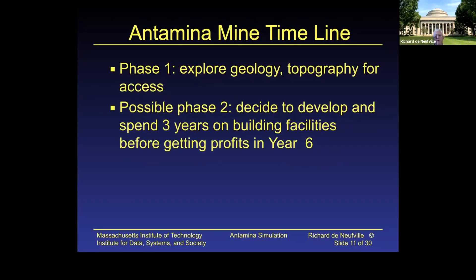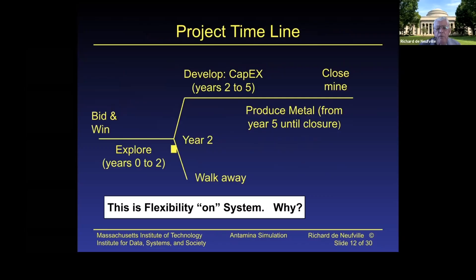The timeline worked as follows: in phase one, you could explore the geology, topography, access, and technical aspects. In phase two, you had to spend three years or more developing the project before getting your profits. From a decision analytic point of view — a decision tree — if you won the bid, you had two years to explore and then could either walk away or spend three years developing it, then produce metal for as long as you wanted.